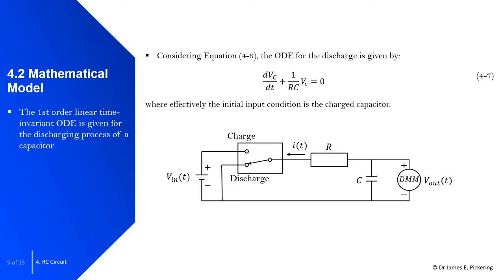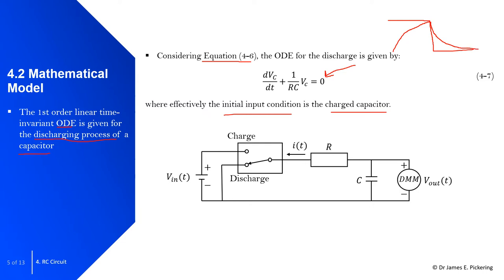Moving on to the ordinary differential equation for the discharging process of the capacitor: this is straightforward because it's effectively the same equation we derived for charging, however the right-hand side becomes 0, where the initial input condition is the already charged capacitor. So when the step input is applied and then removed, you have the charging process followed by the discharging, with the initial condition being the already charged capacitor.